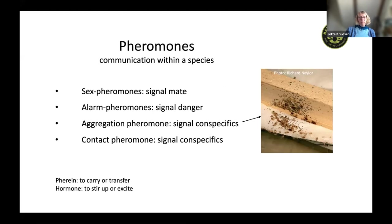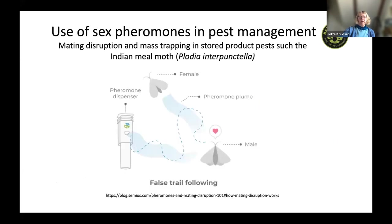There are two major groups. Pheromones are used to communicate within a species. One well-known example is sex pheromones, which signal the presence of a mate. There are also alarm pheromones signaling danger, aggregation pheromones signaling conspecifics, and contact pheromones also for conspecifics. The word 'pheromone' means that it carries information that stirs up or excites the organism that receives it — but this is within species.